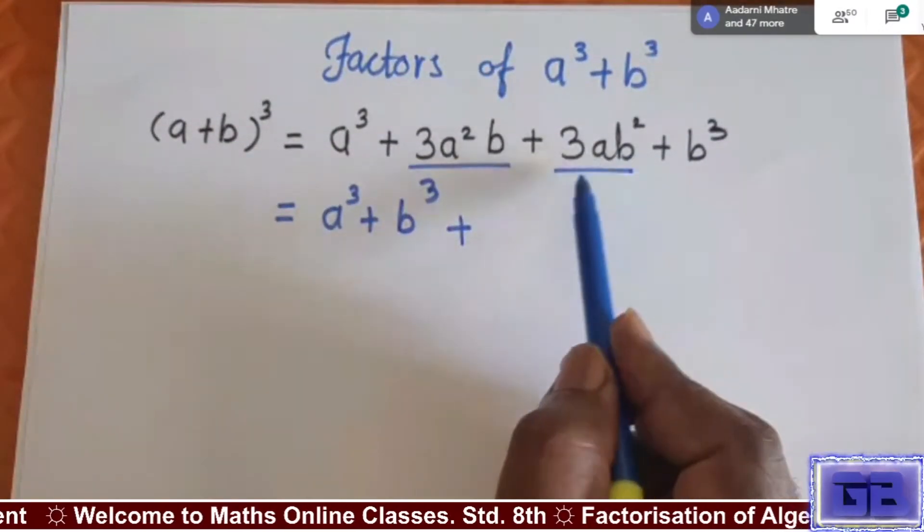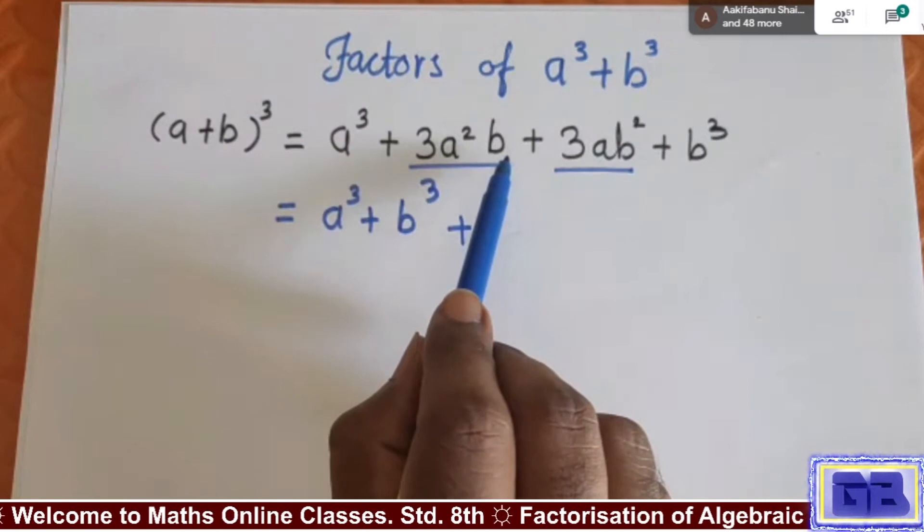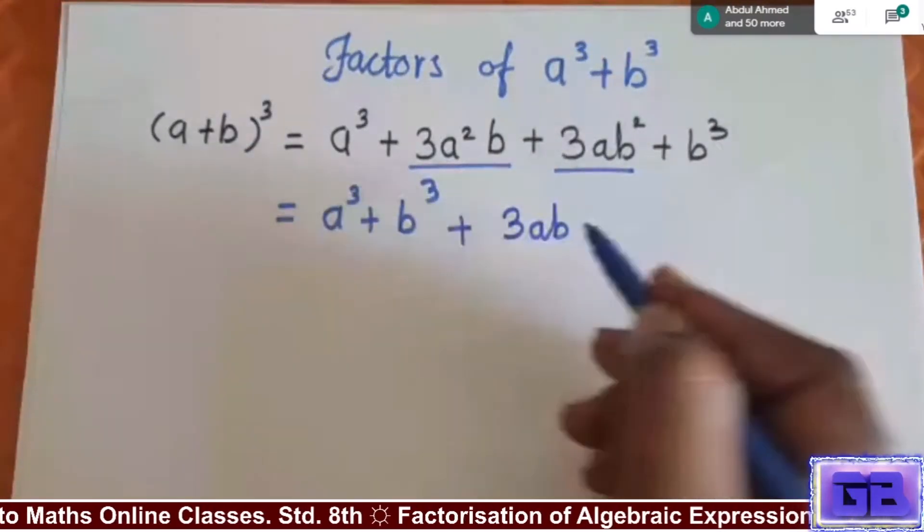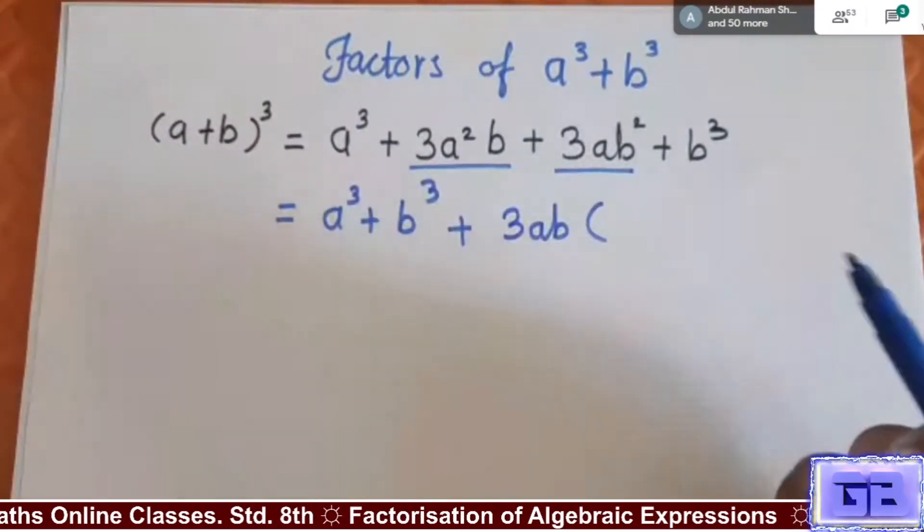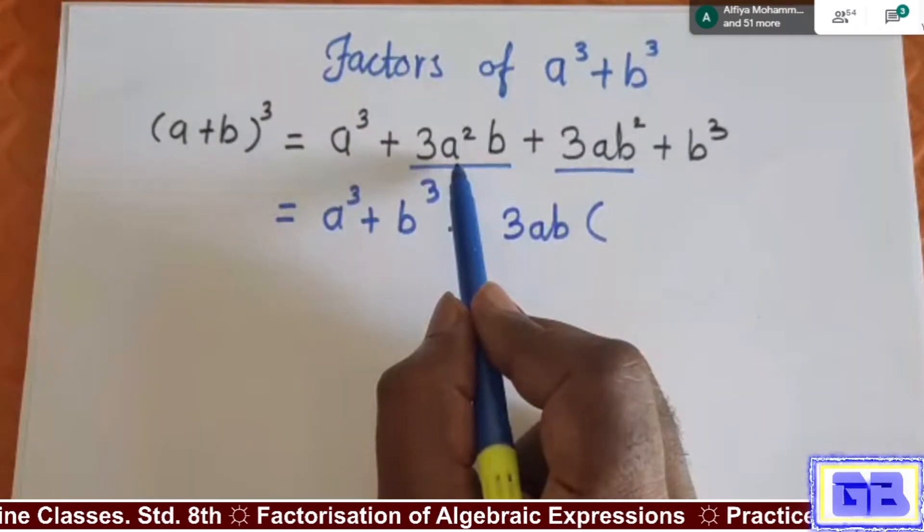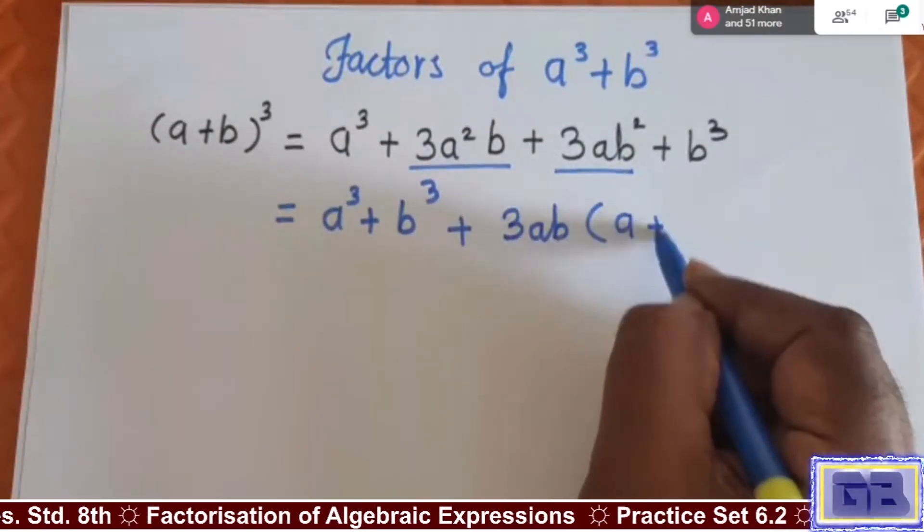Three is there, here three is there, here a², here a, here b, here b². It means 3ab we can take as a common. So I'm taking 3ab outside and what will be left inside the bracket? If 3ab from these terms I have removed, a is left, so I write here a plus.